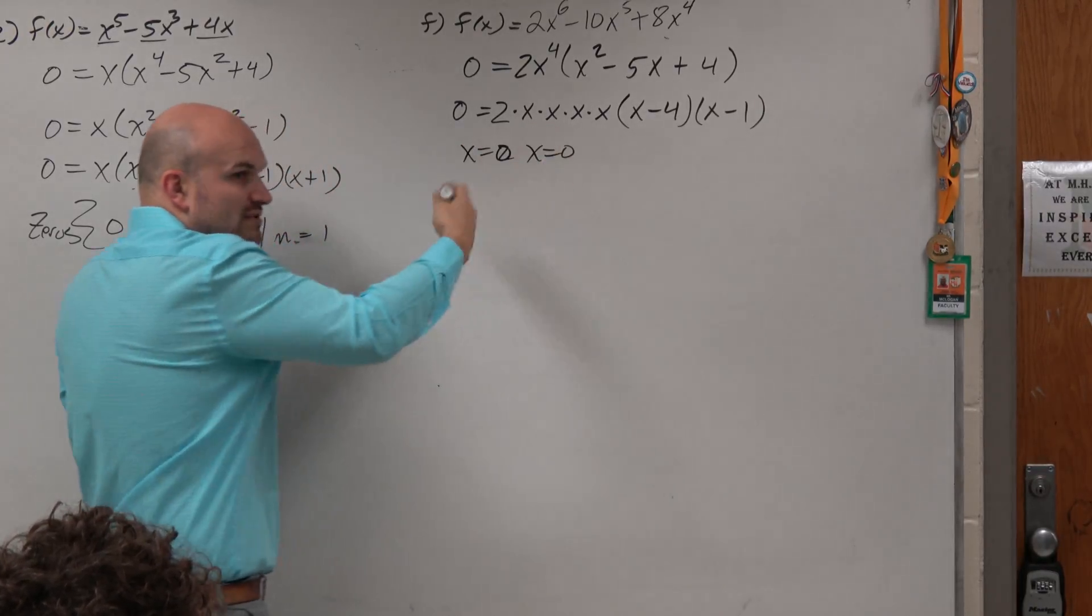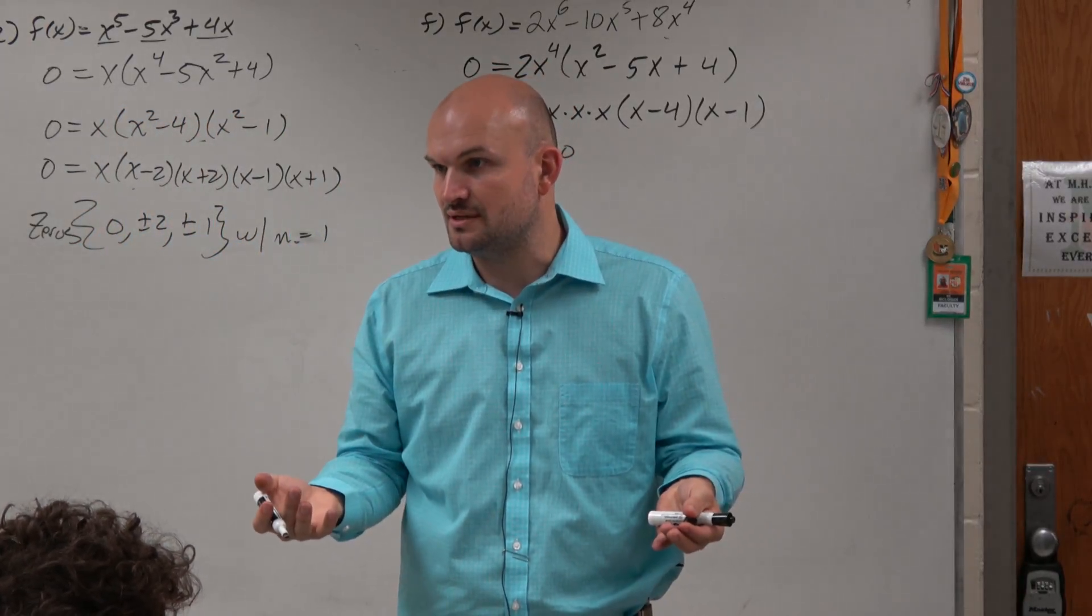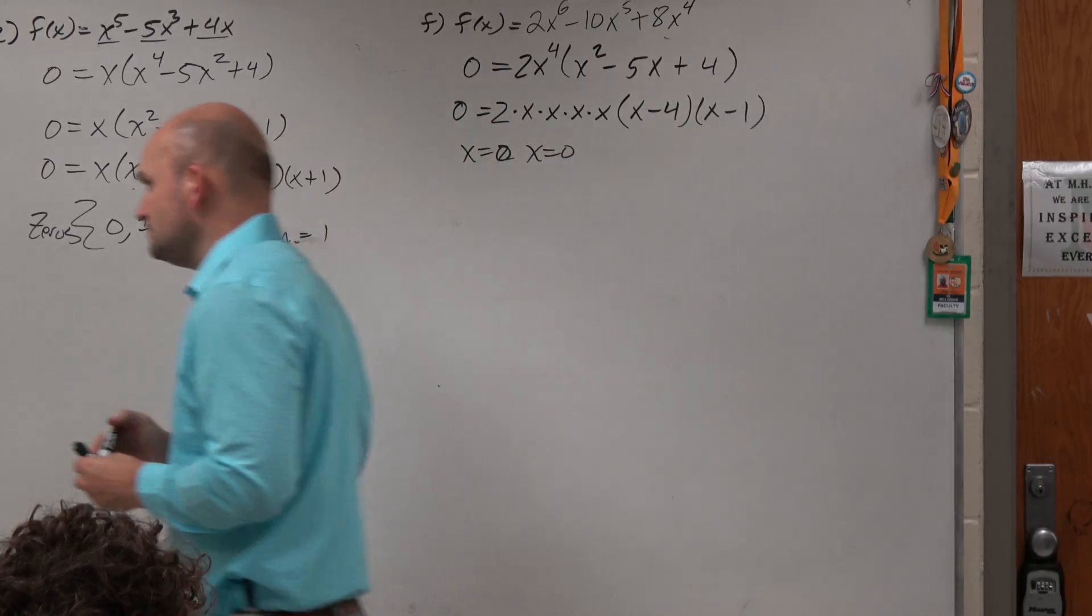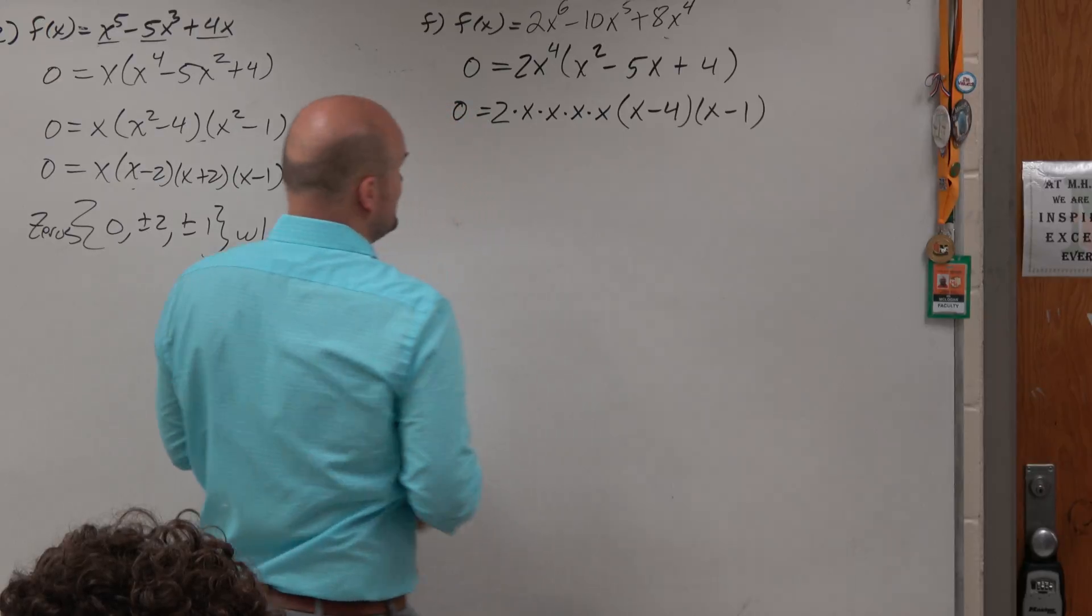You're just doing that 4 times over again, right? That's what multiplicity is. It's the repetition of the zeros, right? So that's why we know this has a different multiplicity.